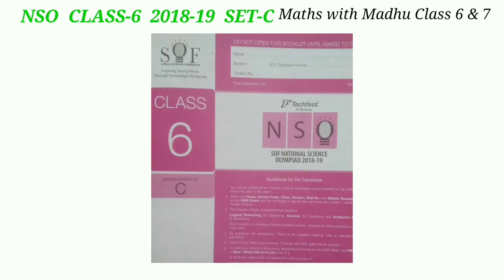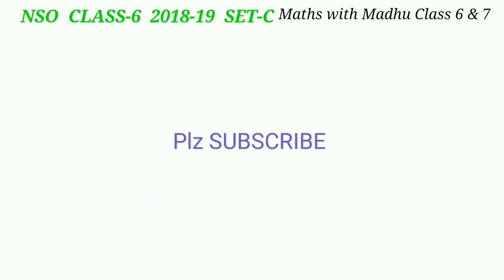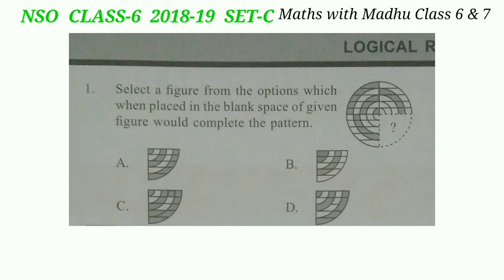Hello everyone, welcome back to my channel. Today we are going to start the 2018-19 NSO paper Set C for Class 6. Please subscribe to my channel and hit the bell icon to get all the latest notifications. Let's start with the logical reasoning portion. Question 1: select a figure from the options which when placed in the blank space of the given figure would complete the pattern.